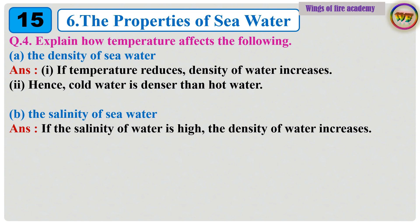Question 4: Explain how temperature affects the following. A. The density of seawater. Answer: If temperature reduces, density of water increases. Hence, cold water is denser than hot water. B. The salinity of seawater. Answer: If the salinity of water is high, the density of water increases.